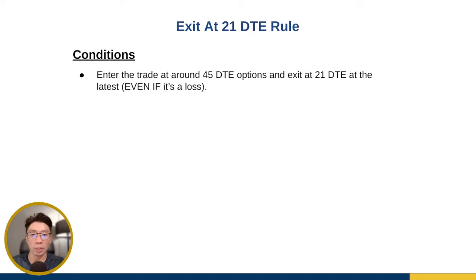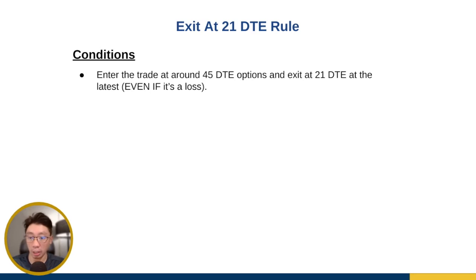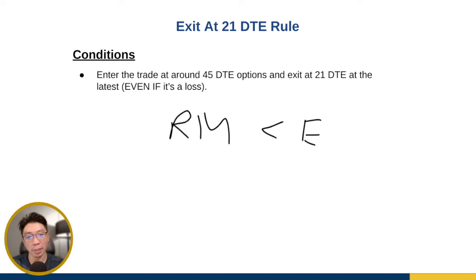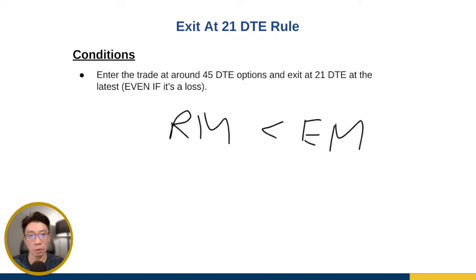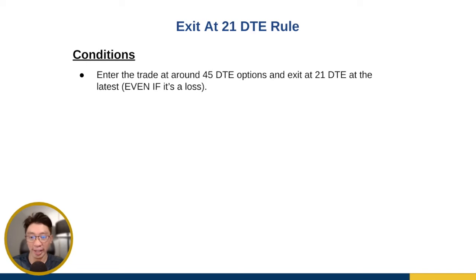You might be wondering why 45 DTE. The reason really comes from the Tasty Trade research team. What they found is that when you enter your trade at around 45 DTE, you have an edge in the long term — the realized move is most often lesser than the expected move. For this video, I won't go into that detail, but what you need to know is that the exit at 21 DTE rule only applies if you enter around 45 days to expiration. You do not want to use like 30 DTEs, because if you use 30 DTEs and exit at 21 DTEs, there's only nine days in the trade — it's just too short.